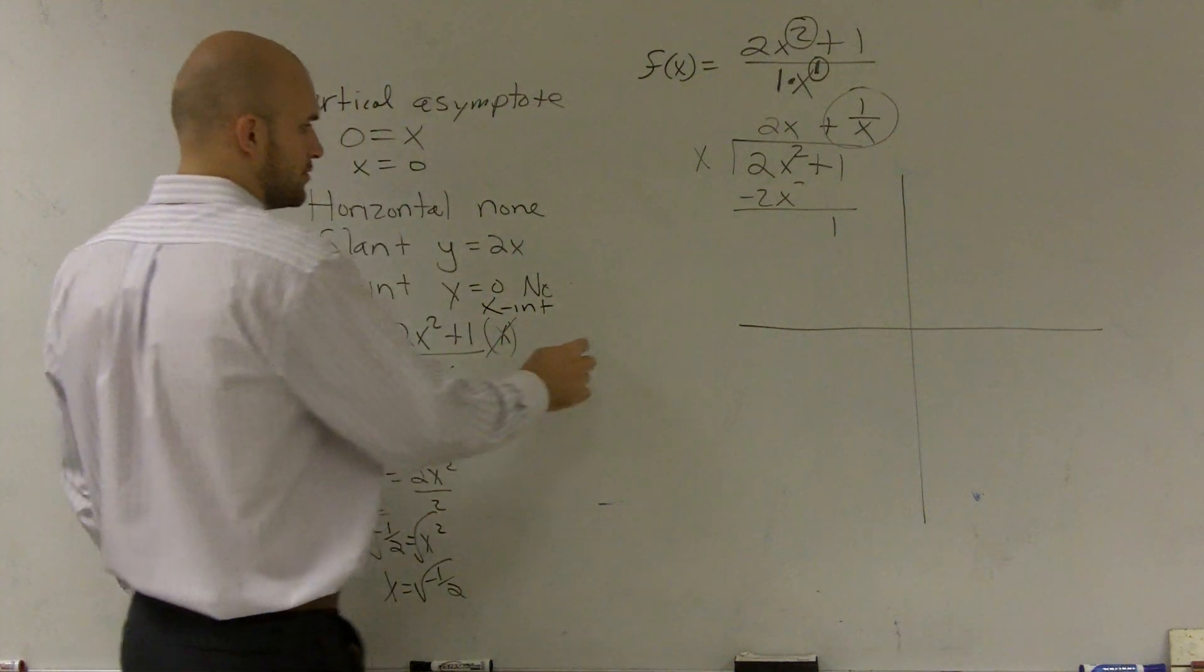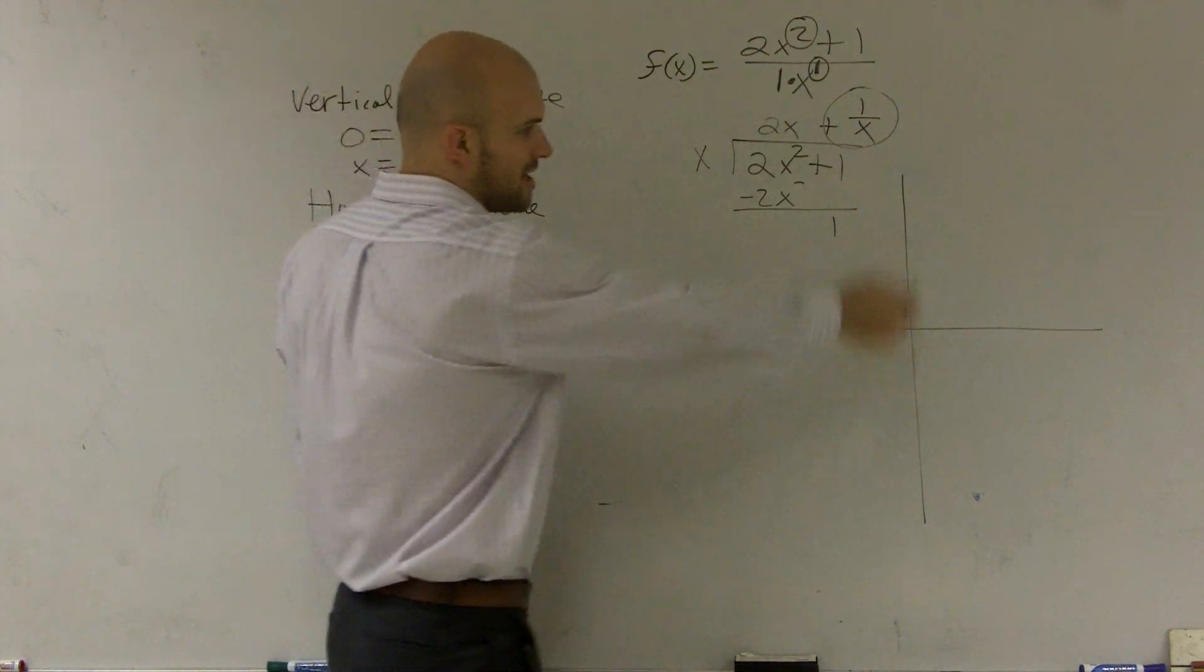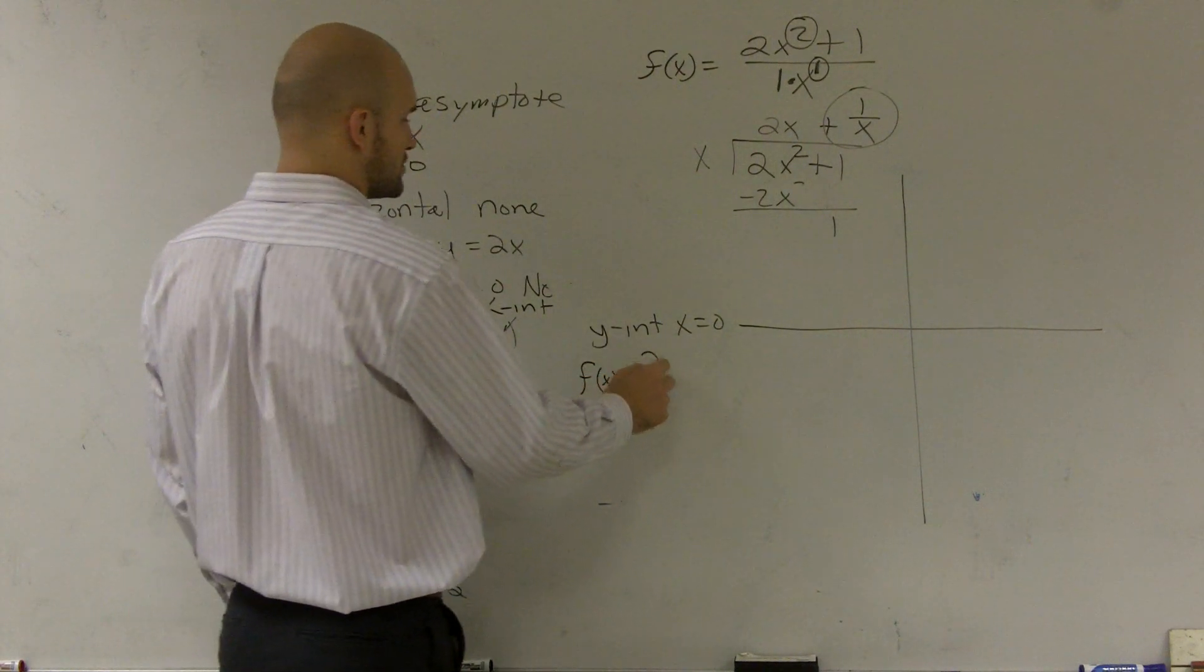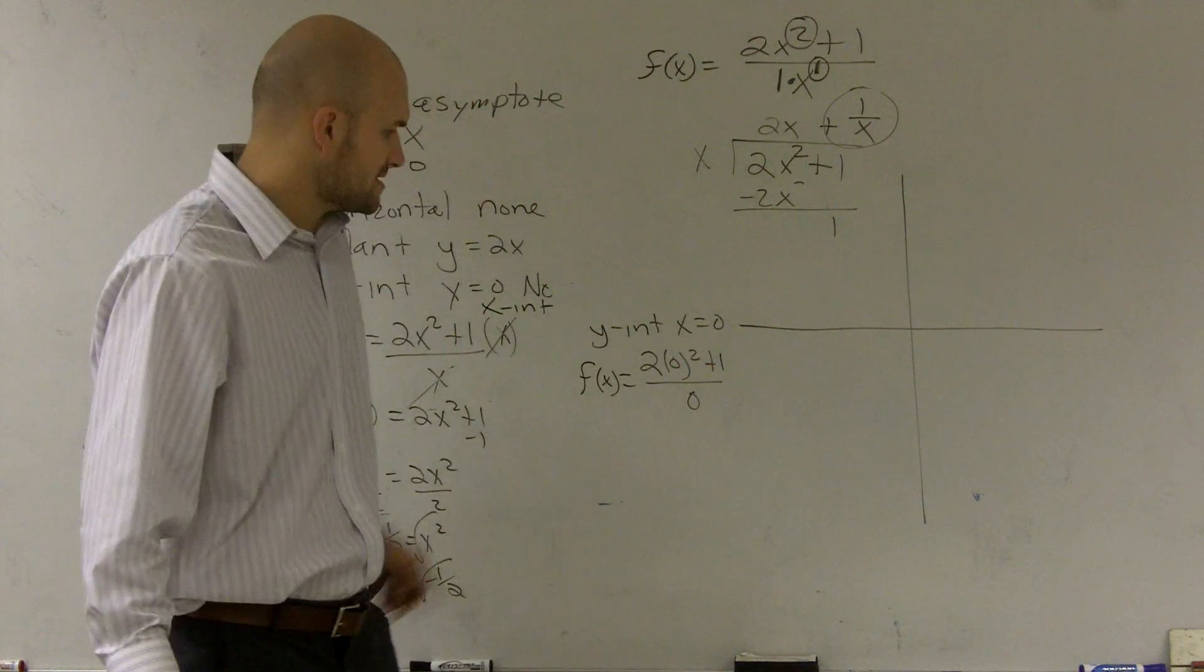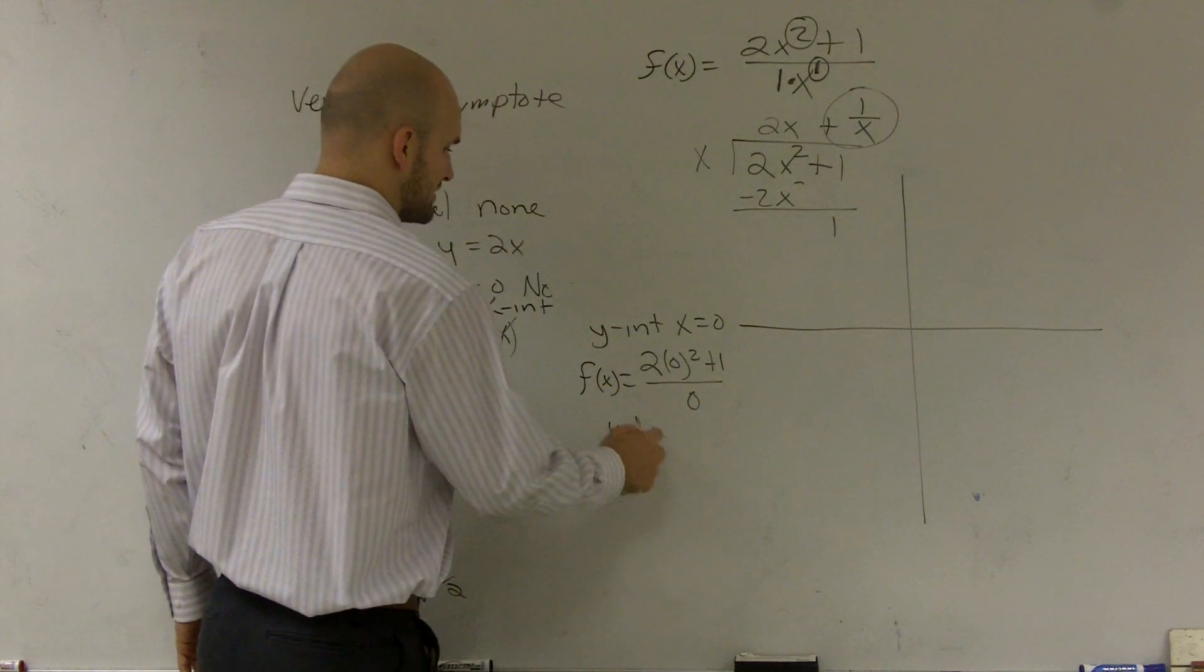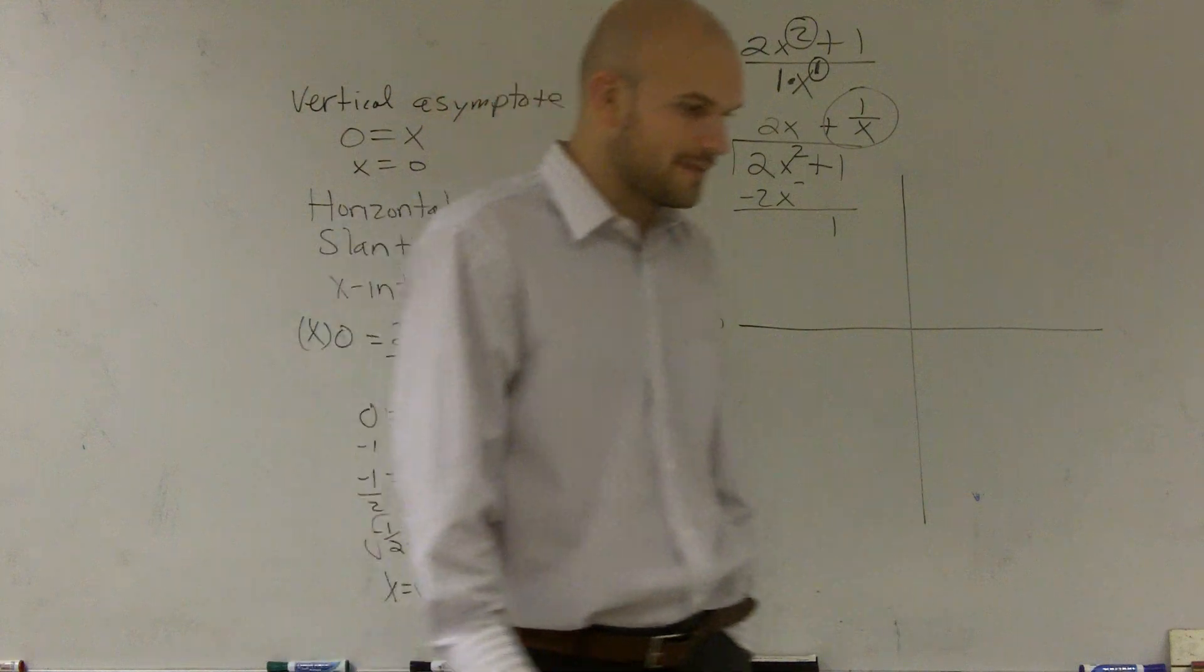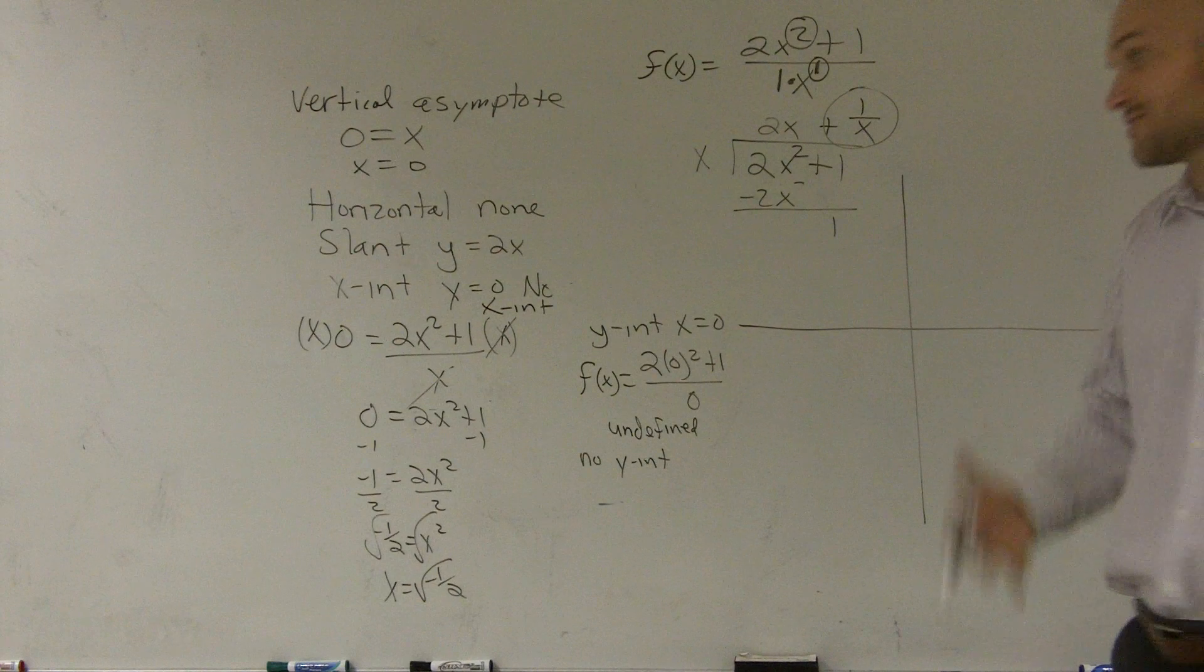So now let's find the y intercept. The y intercept is when x is equal to 0. Where it crosses is where x is equal to 0. So I say f of x equals 2 times 0 squared plus 1 divided by 0. Well, it doesn't matter what's on top. I have a 0 on the bottom. So, therefore, again, that is undefined. So, therefore, there's no y intercept. So, therefore, right now, I have on my graph, I do not have a y intercept, nor do I have an x intercept. So this graph is going to be pretty interesting.